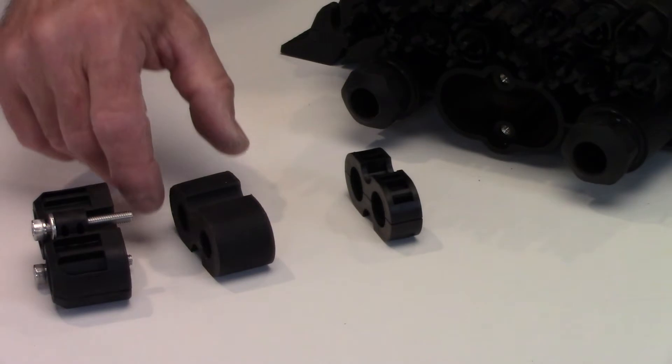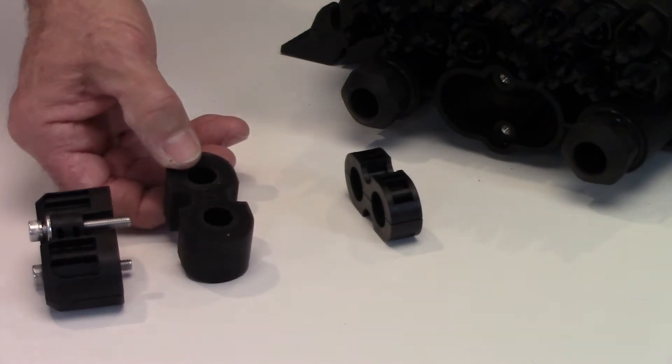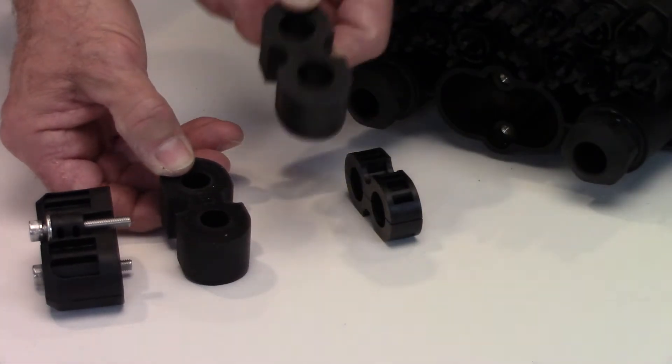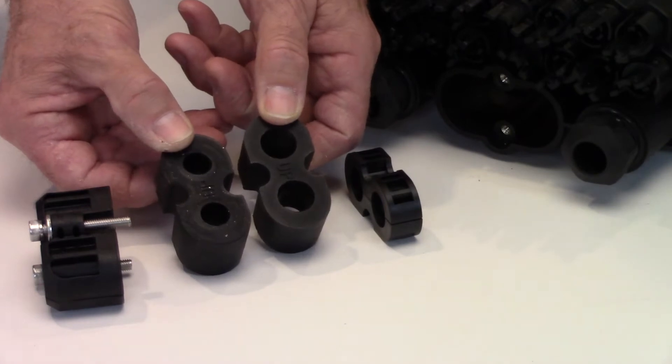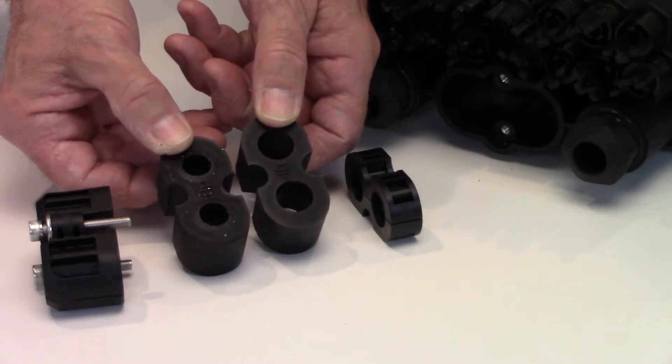The FSDC can accommodate cable diameters from 10 to 17.5 millimeters. Use the appropriate sealing grommet for the cable that is being installed.